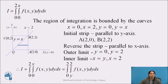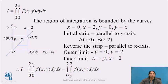So the region of integration is the triangle OAB, and the initial strip is parallel to the y-axis as y is expressed as a function of x. To change the order of integration, we will reverse the strip so it becomes parallel to the x-axis. We will move this strip within the region of integration OAB, which gives us the outer limits as y equal to 0 and y equals to 2.